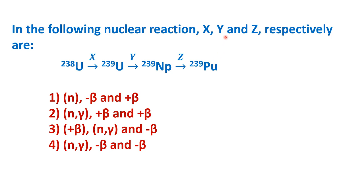In the following nuclear reaction, X, Y and Z respectively are — there is a nuclear reaction scheme given here and they are asking us what is X, Y and Z. There are three things we will see in the video: one is about neutron capture reaction, the second is about the application of this reaction, and the third is about how to solve this particular question.